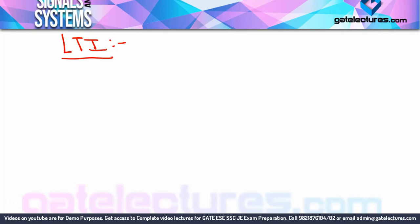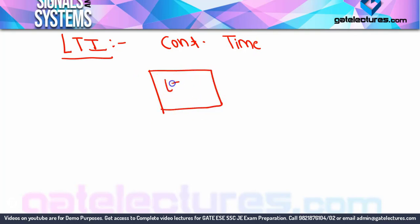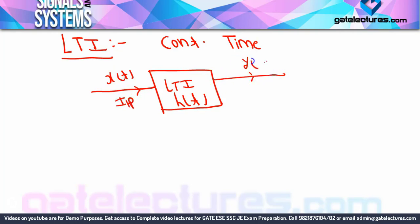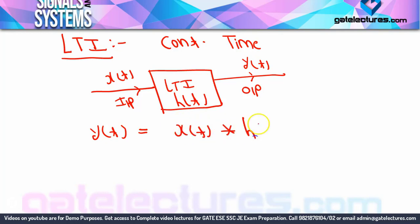First, let me do the analysis for continuous time — what is the LTI system. Suppose you have a system, an LTI system, which I am showing as H(T). The system representation is H(T), the input to the system is X(T), and the output of the system is Y(T). So this is basically your LTI system. Now, for any LTI system, the output or response is input convolved with the system, that is, X(T) convolved with H(T).